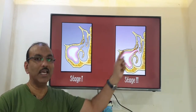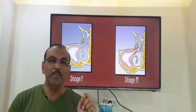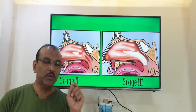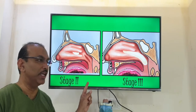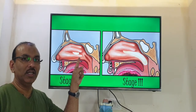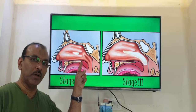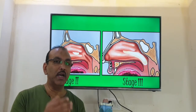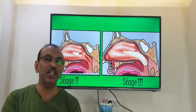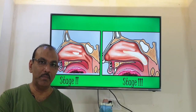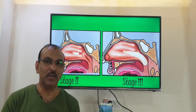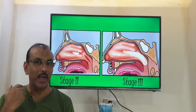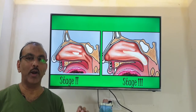So this part becomes like a polyp. Now if you put a camera into the nose and have a look, stage 2 will look like this. This can progress in the posterior direction and it can reach the part which is just behind the nose. The part behind the nose is called the choana. So the polyp starts from the antrum and goes to the choana, so it is called an antrochoanal polyp.